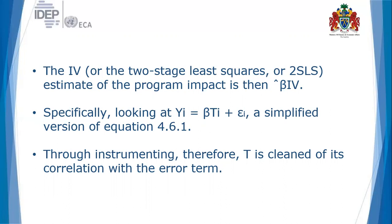Through instrumenting, T is cleaned of its correlation with the error term. The instrumental variable method therefore cleanses the variable T for program participation of its correlation with the error term, so that the estimates are not biased.